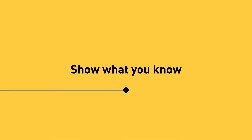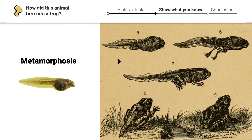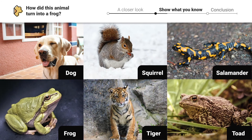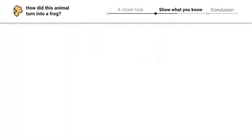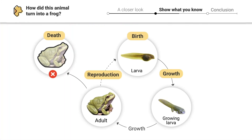Now that you've learned how tadpoles become frogs, it's time to show what you know. Today you learned about a process called metamorphosis, where animals go through big physical changes as they grow. But not all animals go through metamorphosis — use your knowledge of the amphibian life cycle to pick out which of these animals will not go through metamorphosis.